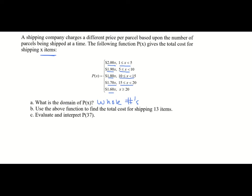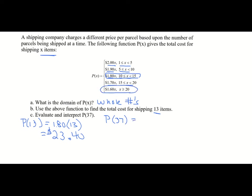Find the total cost for shipping 13 items. 13 falls between 10 and 15, so it's $1.80 per item. P of 13 equals $1.80 times 13, which costs $23.40. Then evaluate and interpret P of 37: 37 items means any amount greater than 20, so it's $1.60 per item. $1.60 times 37 equals $59.20 to ship 37 items.